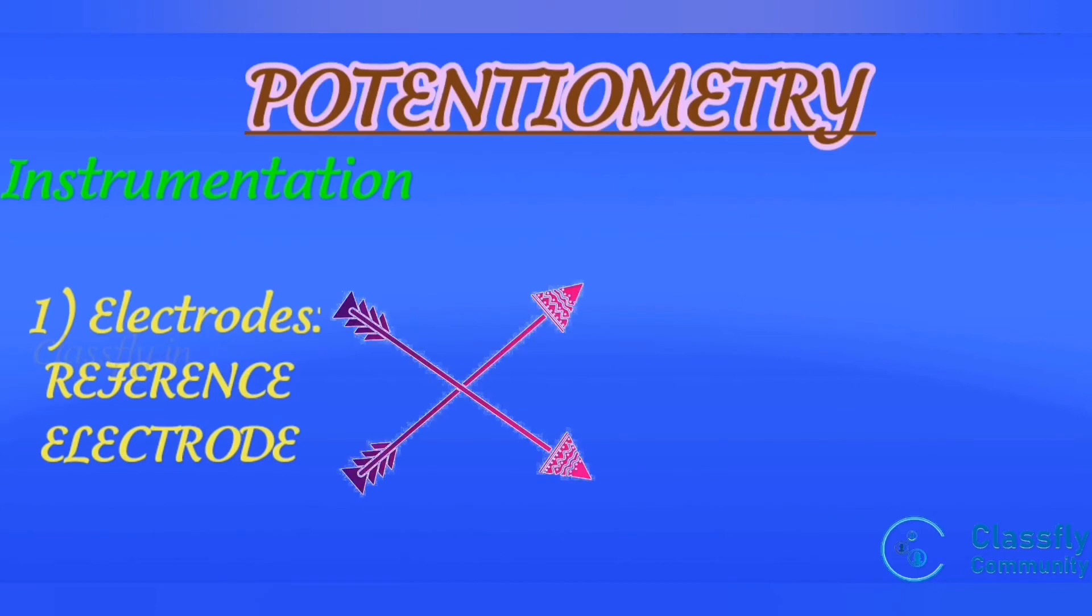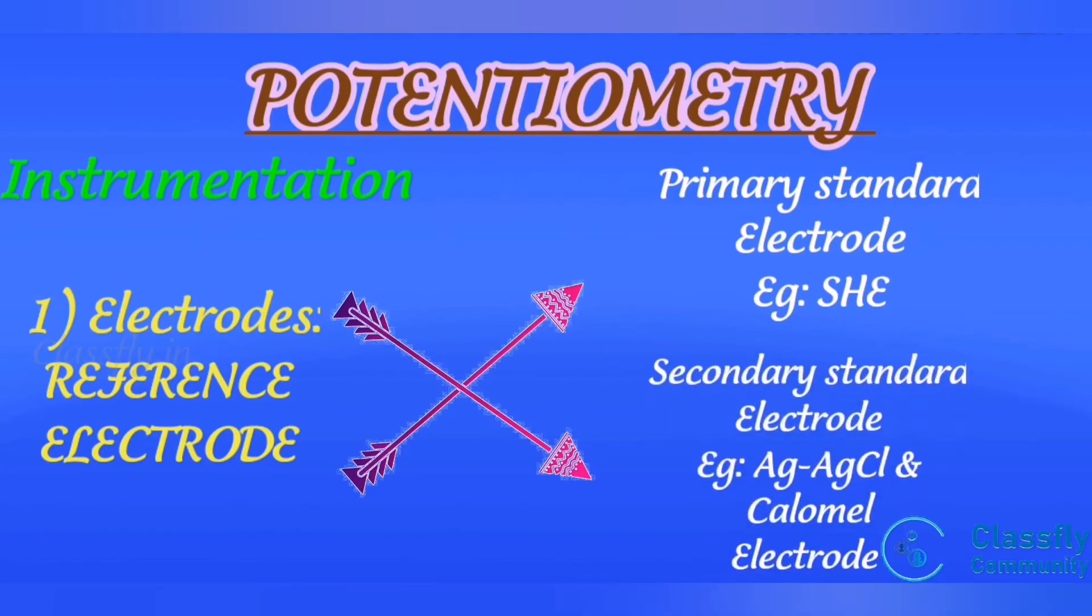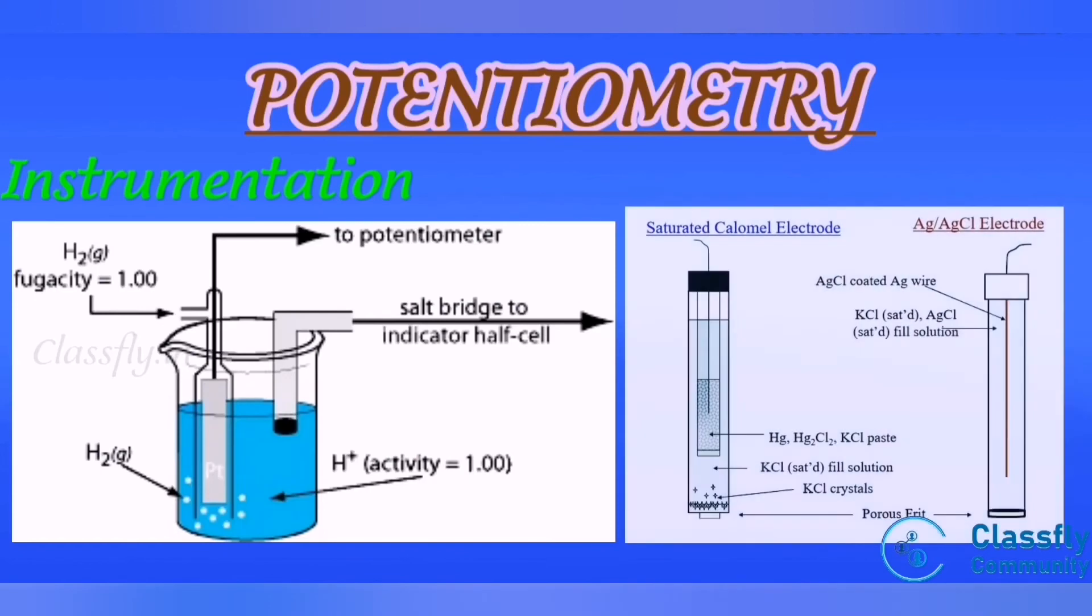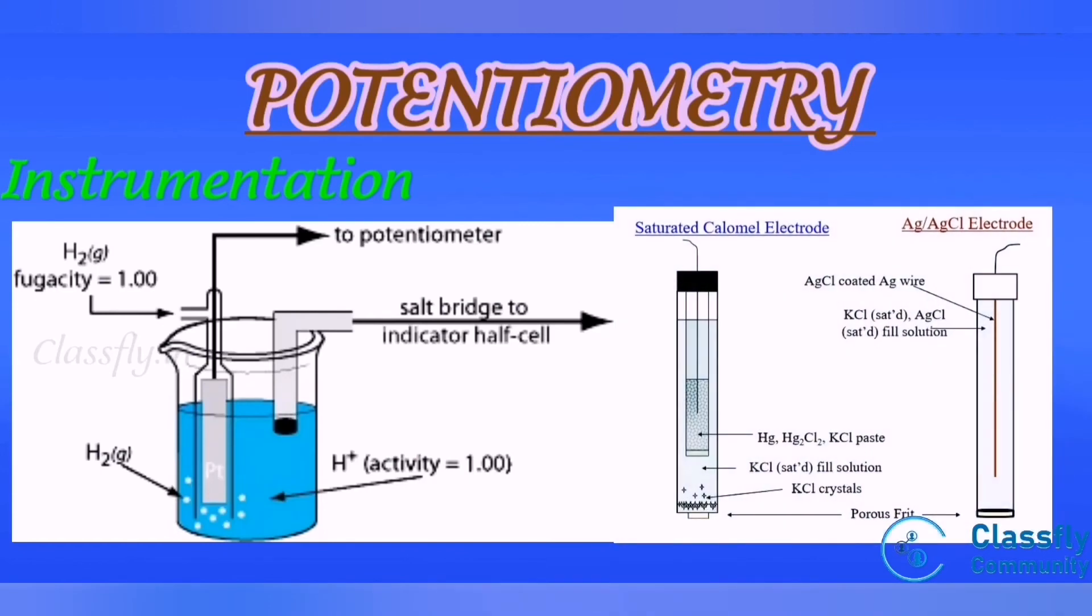Reference electrode: The reference electrodes are classified into two main classes. They are: first one, primary standard electrode; second one, secondary standard electrode. The example of primary standard electrode is standard hydrogen electrode (SHE). Example of secondary standard electrode is silver-silver chloride electrode and saturated calomel electrode. We have already studied detail about reference electrode in previous videos.